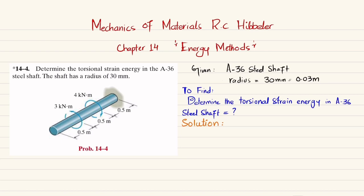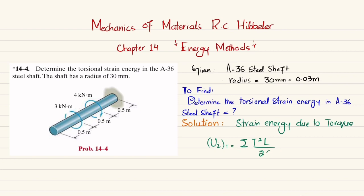Let's start with the solution. The strain energy due to torque (torsion) can be represented as U_i = Σ T²L / (2GJ), where T is torque, L is length, G is the modulus of rigidity, and J is the polar moment of inertia.